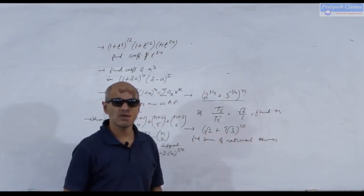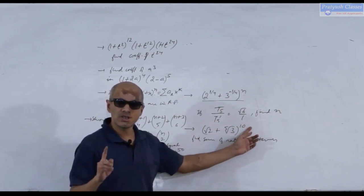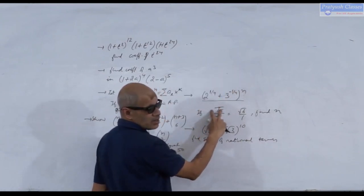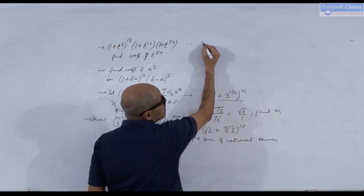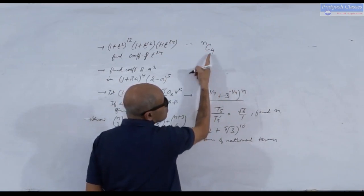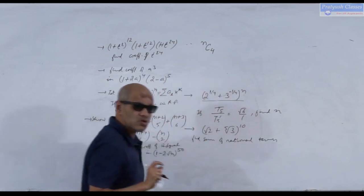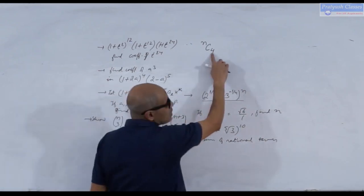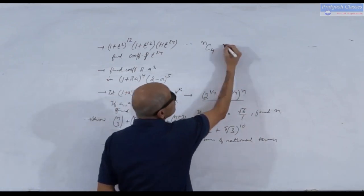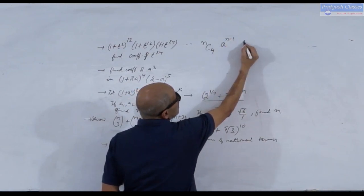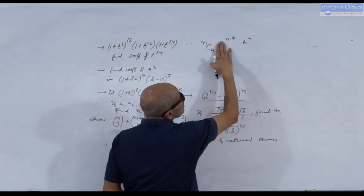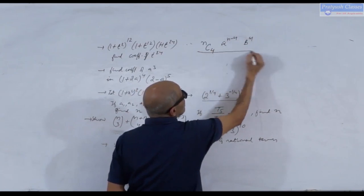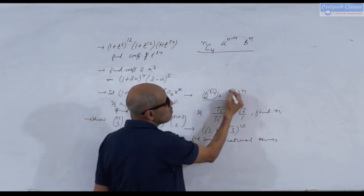There is one unknown — n — so we need one equation, which is given by the ratio condition. The 5th term from the beginning has binomial coefficient nC4, then a^(n-4) and b⁴. We set a = 2^(1/4) and b = 3^(-1/4). The 5th term from the end has binomial coefficient nC(n-4), with a⁴ and b^(n-4).